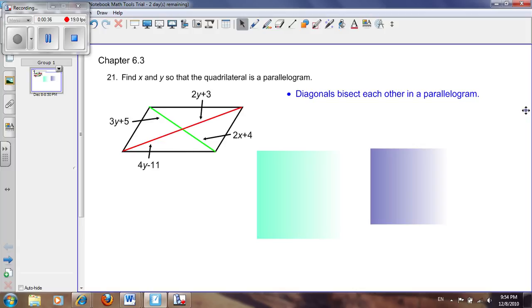The equations we'll be working with are 2y plus 3 equals 4y minus 11, and 3y plus 5 equals 2x plus 4. Since the second equation has two different variables, we cannot solve it without solving the first equation first.